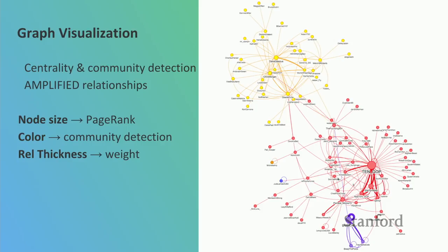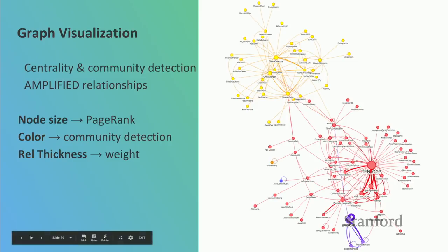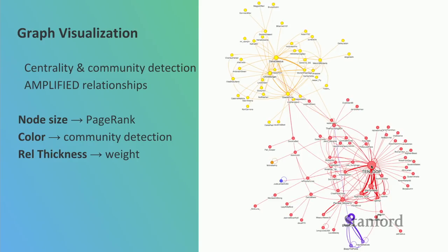These are the troll communities — a visualization of the inferred retweeted relationship where trolls have retweeted other trolls, with community detection run on top. We see three distinct communities. Looking at the hashtags these communities are using: the red group talks mostly about right-wing political things, the yellow group about more left-leaning political things, and this purple group — the smaller one at the bottom — talks almost exclusively about Black Lives Matter hashtags. The Tennessee GOP account is clearly the most influential within the red group.